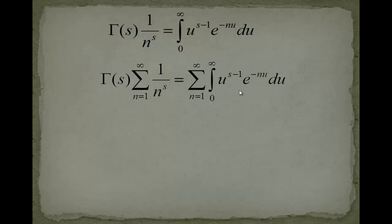On this side we get the zeta function; this is just the definition of the zeta function. On the right-hand side, we do a little trick. Because this integral is absolutely converging, we can change integral and sum. Then I can even take the sum to only add over the exponential, because u to the s minus 1 doesn't have an n in it. We are only adding these exponentials.